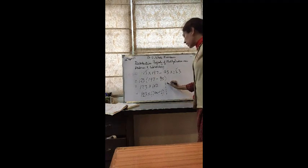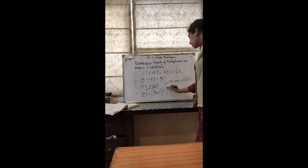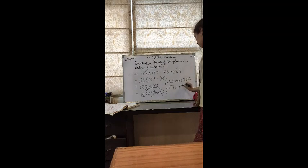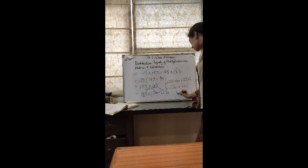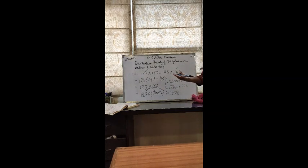Again we split using the distributive property: 123 into 100 plus 123 into 2. So we get 12300 plus 246, which gives the final answer 12546. This question shows the variety — from subtraction we switch over to addition, depending on the requirement of how we need to solve the question.